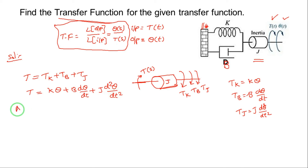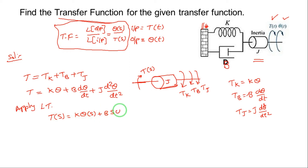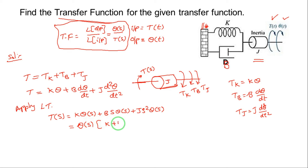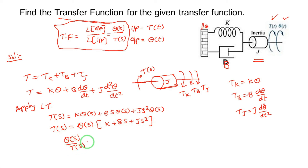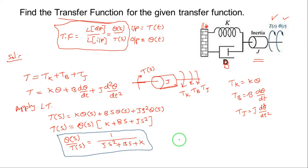Now apply Laplace transformation to the above expression: T(s) = K·theta(s) + B·s·theta(s) + J·s²·theta(s). Taking theta(s) as the common term: T(s) = theta(s)·(Js² + Bs + K). Since our question is theta(s)/T(s), the transfer function is 1 / (Js² + Bs + K). This is the transfer function for the given rotational system.